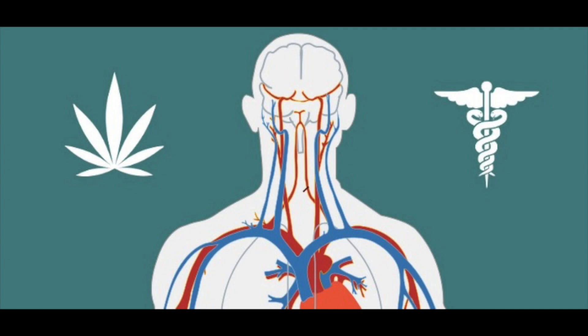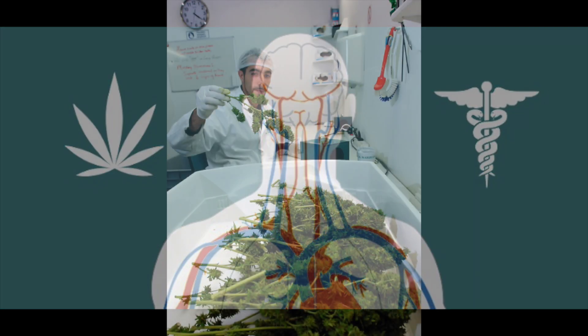Learn more about the endocannabinoid system and how it affects your health. The endocannabinoid system is a biological system which plays many important roles in the human body. It's also responsible for the physical and physiological effects of cannabis.